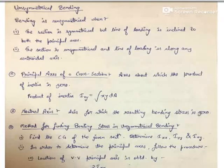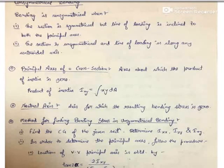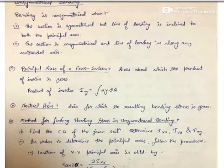The method to analyze problems of unsymmetrical bending: first, find the center of gravity of the given section. Then determine Ixx, Iyy, and Ixy — the moment of inertia about the xx axis, yy axis, and the product of inertia. Here, xx and yy are the centroidal axes and are not necessarily the principal axes. For symmetric sections, the centroidal axes are indeed the principal axes, but this is not the case for unsymmetrical sections.